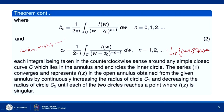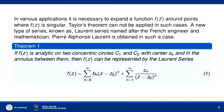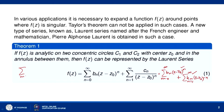Using c_n = b_{-n}, the series becomes Σ(n=0 to ∞) b_n (z - z0)^n + Σ(n=1 to ∞) b_{-n} (z - z0)^{-n}. When n runs from 1 to infinity, -n runs from -infinity to -1, so we can combine both series and write Σ(n=-∞ to ∞) b_n (z - z0)^n.